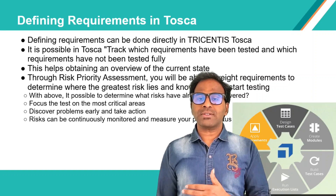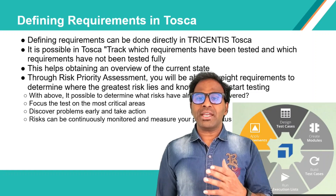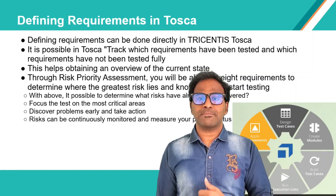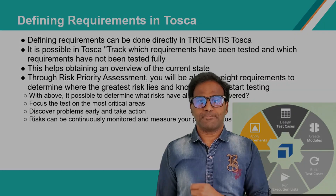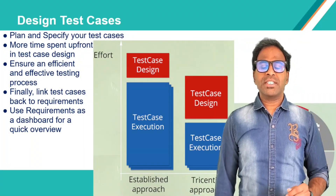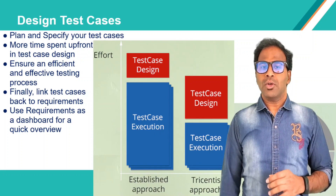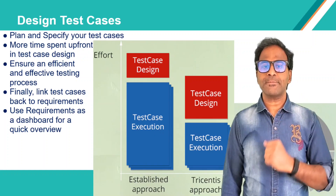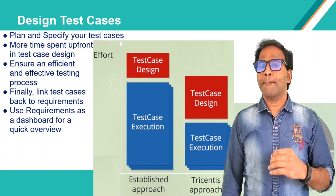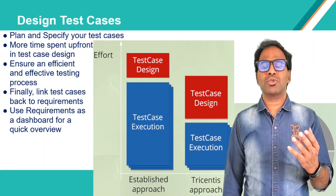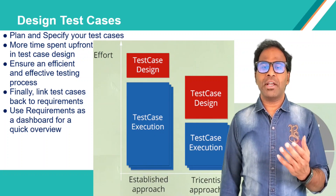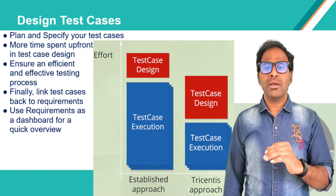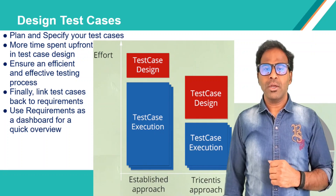It is very important in Tosca that requirements can be weighted based on risk, meaning we can perform risk-based testing — a very important concept in testing. Regarding the design test cases section, whatever I explained about requirements — how to create a requirement structure and how to weight requirements based on risk — we will be weighting in two different ways: basic weighting and risk-based weighting. I'm going to explain all these concepts practically by walking through the Tosca automation tool.